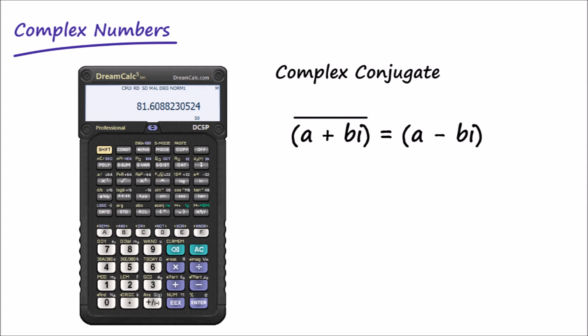Finally, let's finish with an example using the complex conjugate. Taking the complex conjugate of a value simply reverses the sign of its imaginary component.